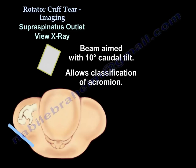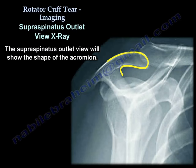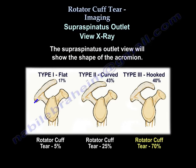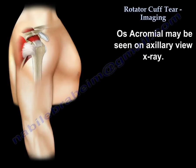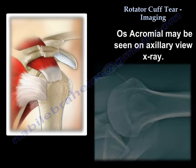We also get the supraspinatus outlet view. It will show us the acromion shape — whether it is flat (type 1), curved (type 2), or hooked (type 3). It can also show us the os acromion.